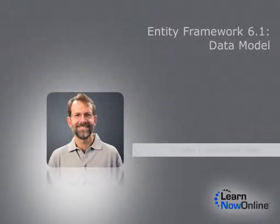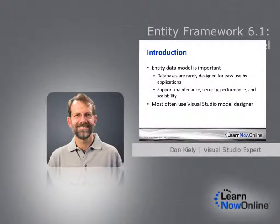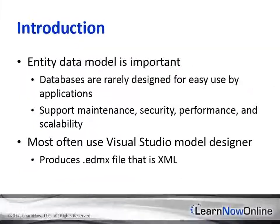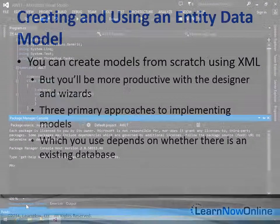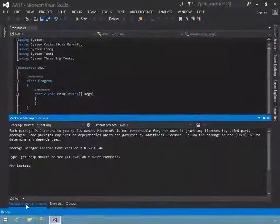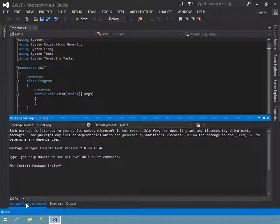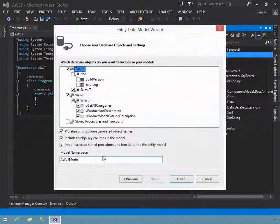Entity Framework's Entity Data Model is the key link between the entity data objects in your application and the backend data store where data resides. It provides all the pieces that Entity Framework needs to provide your application with a conceptual model that the application uses, a storage model of the data store schema, and mappings between the two, along with support for relationships between the various entities in the model. Entity Framework uses the model to generate .NET entity classes and APIs that provide powerful data access features to an application.